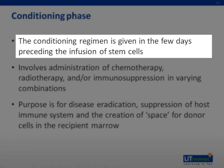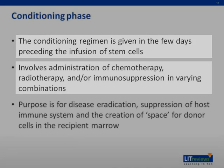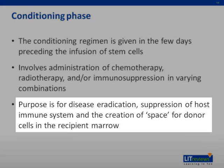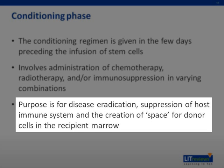Before the infusion of the stem cells, the patient will undergo a conditioning phase. This involves the administration of chemotherapy, radiotherapy, and/or immunotherapy in varying combinations. The purpose of this is to eradicate residual disease — for example, leukemic cells — suppression of the host immune system so that it can accept the graft, and the creation of space for donor cells in the recipient's bone marrow.